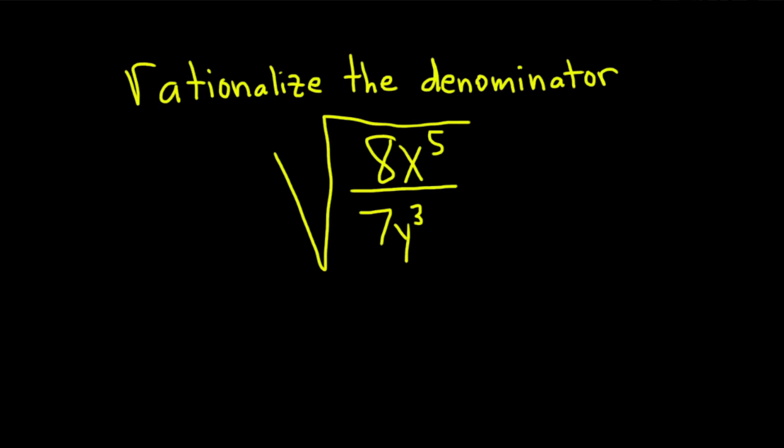Hi, in this problem we're going to rationalize the denominator. We have the square root of 8x to the fifth over 7y cubed.